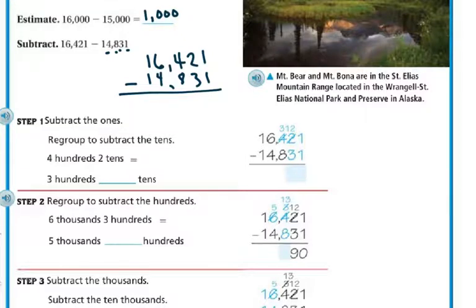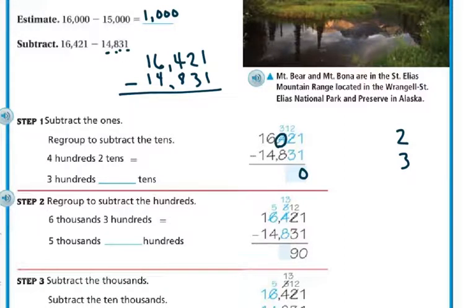So 1 minus 1 is 0. I'm going to need to regroup to subtract the tens because I can't take 3 from 2. I'm going to take from the hundreds — instead of 4 hundreds and 2 tens, I'm going to have 3 hundreds and 12 tens. So I put my 12 up here, and 12 minus 3 is 9, so that part is 90.